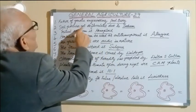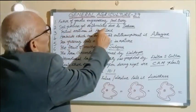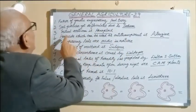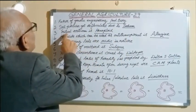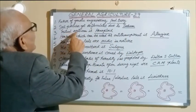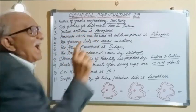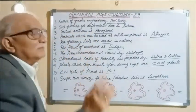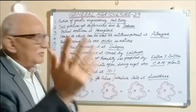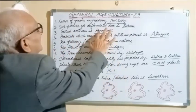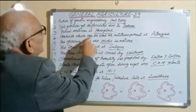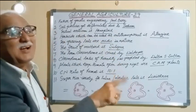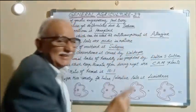Soil particles get deflocculated due to sodium. Triticum aestivum is hexaploid — not tetraploid, it is hexaploid. Also, the herbicide which can be used as an anti-transpirant is atrazine.